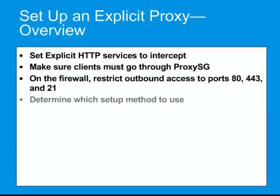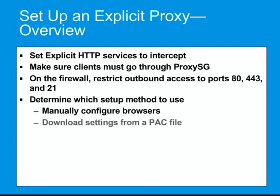Finally, determine which method to use to set up the explicit proxy. One method is to configure each client browser with the proxy server IP address and port number. This might be appropriate if your network is not too complex or the number of client devices is not very high. Another method is to use a proxy auto-configuration, or PAC file, to define how the browser chooses a proxy server. You might select this method if your network has many devices or is complex. With this method, all devices in your network are subject to the same policies and proxy configuration.